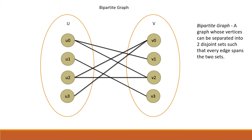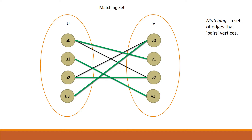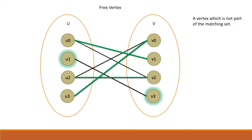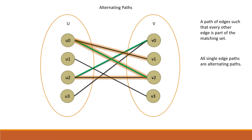This is a bipartite graph — there are two sets of vertices, set U and set V, and each vertex in U is only connected to vertices in set V. This is a matching set: a set of edges that pairs vertices from U to vertices from V. In a matching set, no two edges can share an endpoint. A free vertex is one which is not part of the matching set.